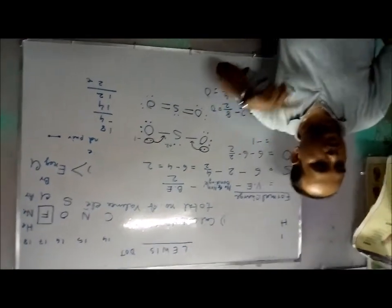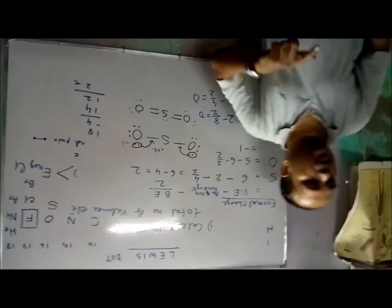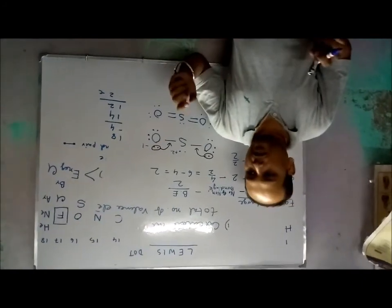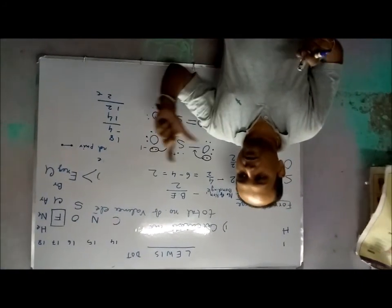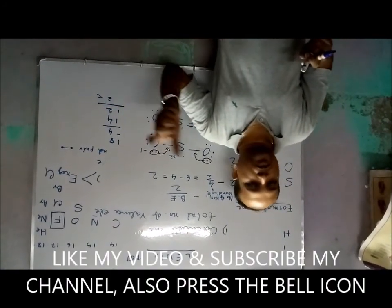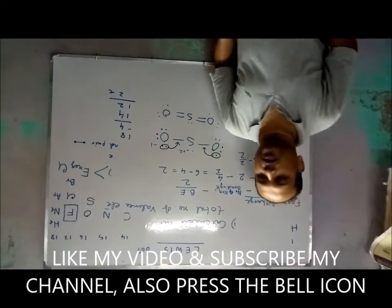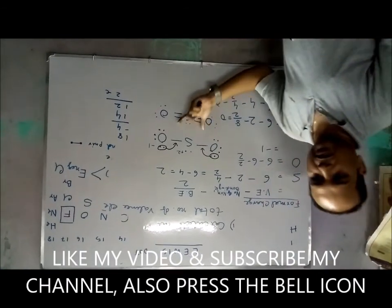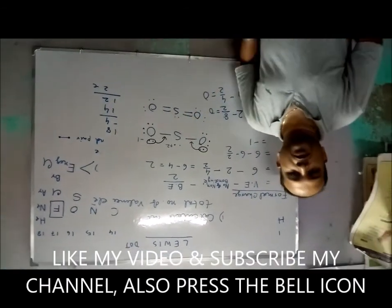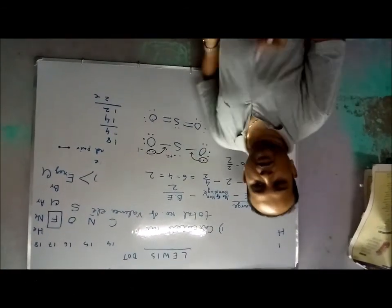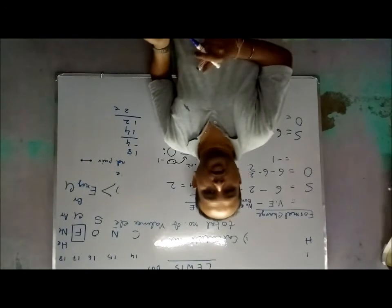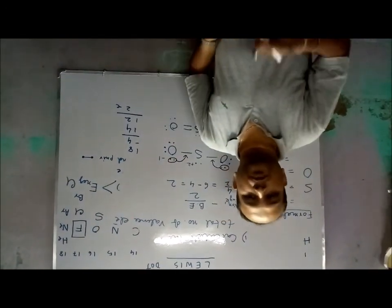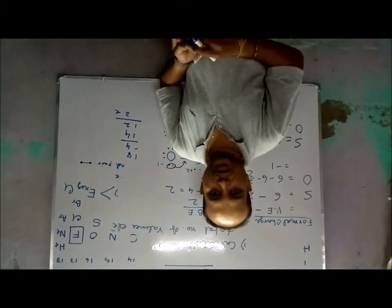It is predicted that SO2 may be linear like carbon dioxide, but due to lone pair repulsion it actually becomes angular. Thank you — please subscribe to my channel if you found this video useful.